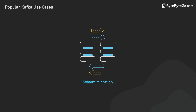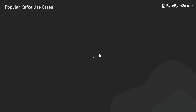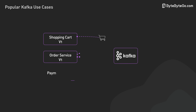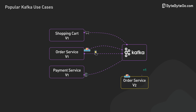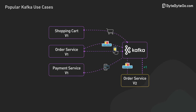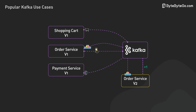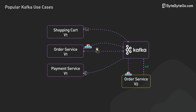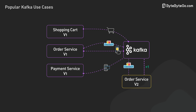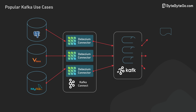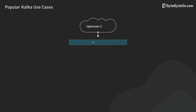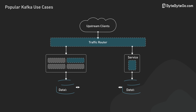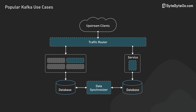The fifth use case is system migration. Kafka does more than just transfer data in migrations — it acts as a buffer between old and new systems, and can also translate between them. This allows for gradual, low-risk migrations. Kafka lets engineers implement complex migration patterns, including the strangler fig and parallel run with comparison.